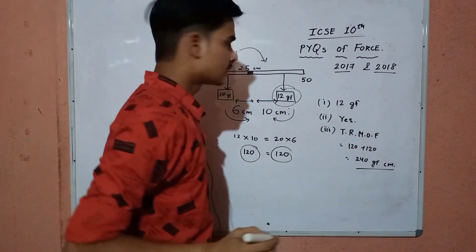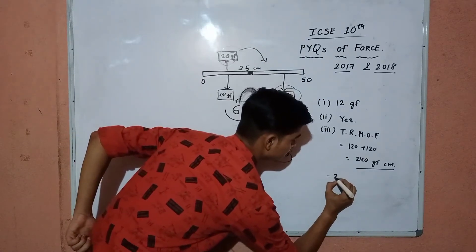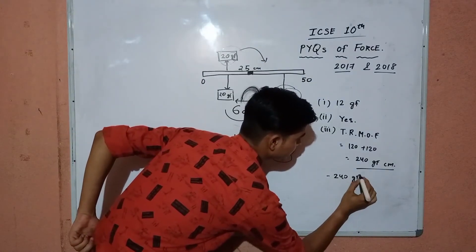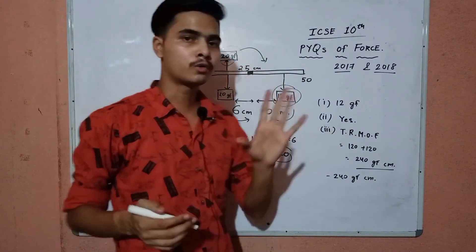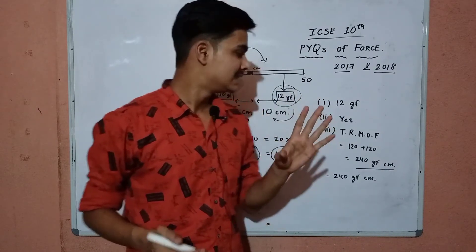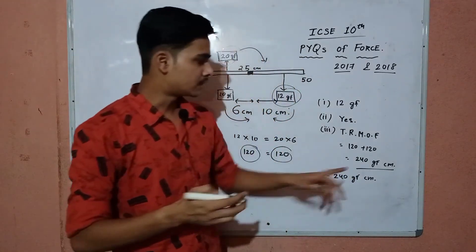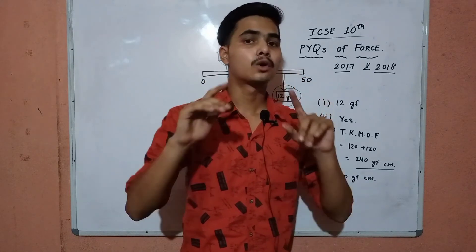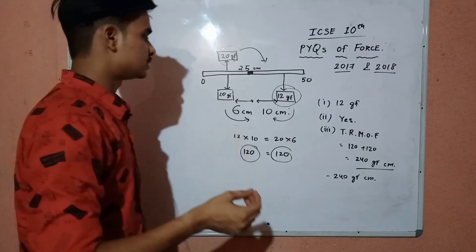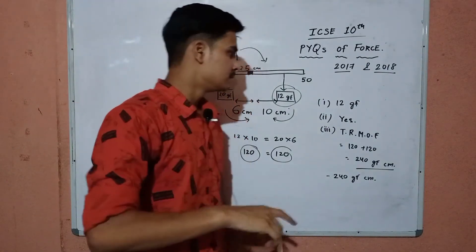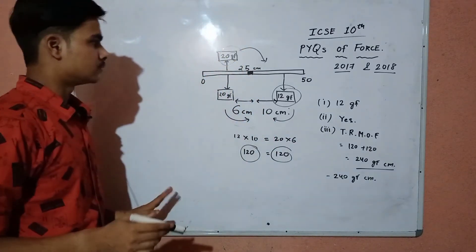This is the required answer — 240 gram force centimeter. To be more accurate, this is negative 240 gram force centimeter, because it is a clockwise moment and clockwise moments are taken as negative. So the correct answer is −240 gram force centimeter, or you can write 240 gram force centimeter (clockwise). This is the required solution for the 2018 question — it was a bit tricky in the last part, but otherwise a good question. Kindly write it down.